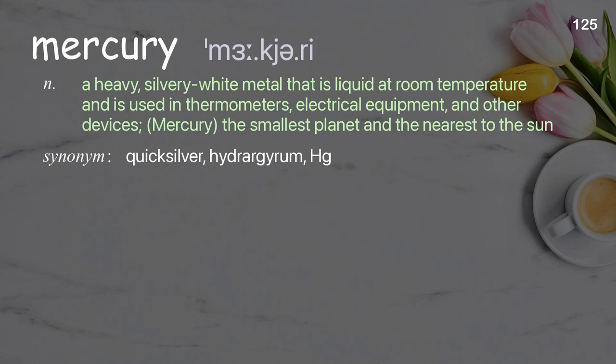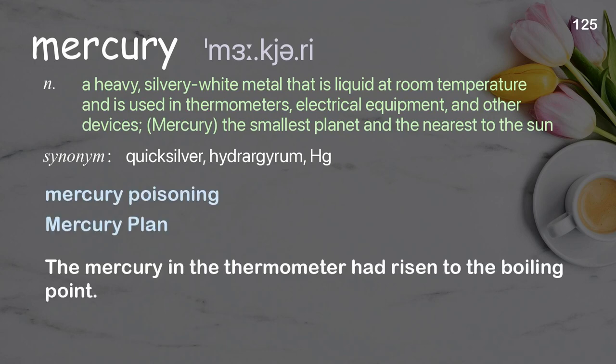Mercury: a heavy, silvery white metal that is liquid at room temperature and is used in thermometers, electrical equipment, and other devices; also the smallest planet and the nearest to the sun. Examples: mercury poisoning, mercury plan. The mercury in the thermometer had risen to the boiling point.